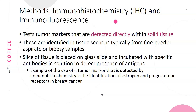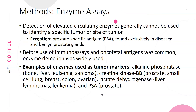Immunohistochemistry and immunofluorescence detect tumor markers directly within solid tissue. These are identified in tissue sections typically from fine needle aspirate or biopsy samples. A slice of tissue is placed on a glass slide and incubated with specific antibodies to detect the presence of the antigens being targeted. An example is the identification of estrogen and progesterone receptors in breast cancer — the biopsy is tested for these receptors to help determine what type of therapy will be used.